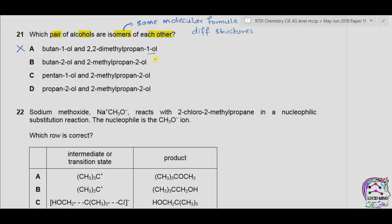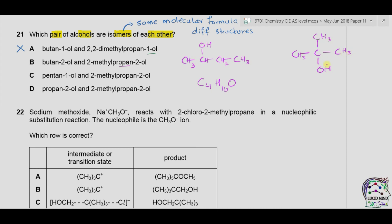In option B we have butan-2-ol: four carbon atoms with the OH on the second carbon, molecular formula C4H10O. The second is 2-methylpropan-2-ol: three carbon atoms in the long chain, with a methyl group and an OH both on the second carbon, giving molecular formula C4H10O. The structures are different but the molecular formulas are the same, so option B could be correct.